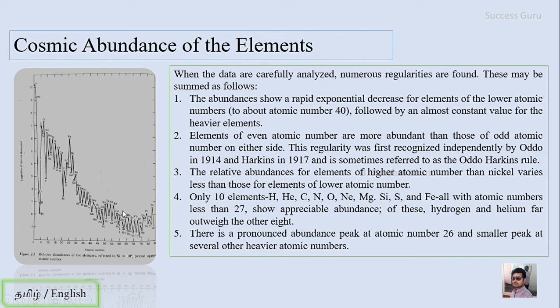These are some of the observations from this graph. From this observation and data you can simply say that the regularities displayed in Table 2.6 suggest that the absolute abundances of the elements depend on nuclear rather than chemical properties and the inherent stability of the nuclei.